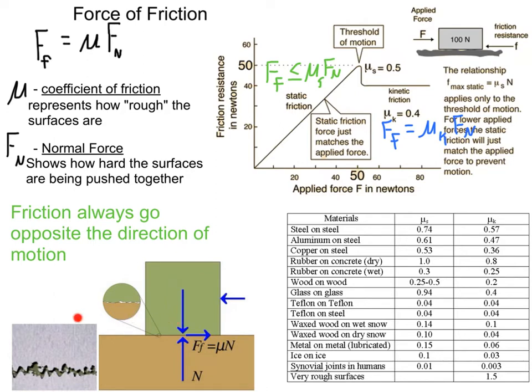Whenever you overcome static friction, you actually get the box moving and we enter into what's called kinetic friction. Notice how the force of friction actually drops at that moment — kinetic friction isn't as great as static friction. The main reason behind that is whenever you have something moving, it's actually easier to keep it going than when it's stationary to get it to start going. So you even feel this little drop-off in friction.